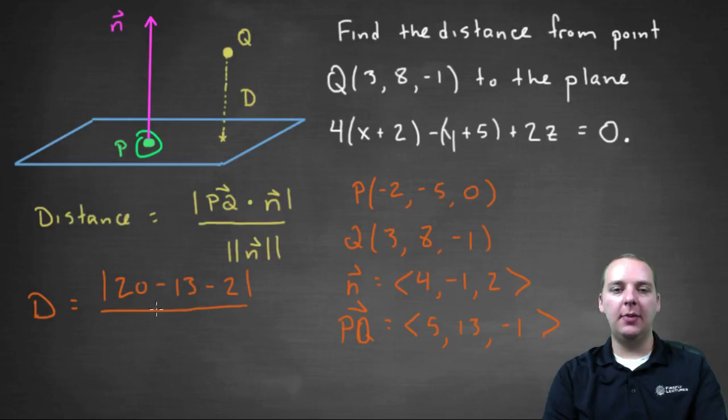We'll take the absolute value of that, and divide it by the magnitude of n, and its magnitude would be the square root of 4² + (-1)² + 2². Alright, let's see, 20 minus 13 is 7, 7 minus 2 is 5, that's already positive, so I'll just leave that like it is.